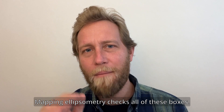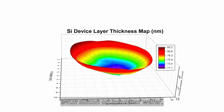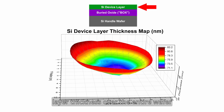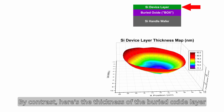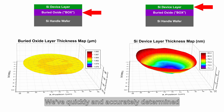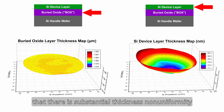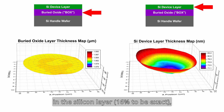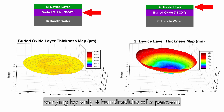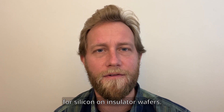Enter ellipsometry. Mapping ellipsometry checks all these boxes. Here's an example where we've mapped a full silicon on insulator wafer. This is the variation of the topmost silicon device layer thickness over the entire wafer, and it's easy to see that this layer is thicker around the edges than in the center. By contrast, here's the thickness variation of the buried oxide layer graphed with the same vertical range. We've quickly and accurately determined that there is substantial thickness non-uniformity in the silicon layer — 16% to be exact — whereas the buried oxide layer is highly consistent, varying by only four hundredths of a percent over the whole wafer. And there you have it: ellipsometry is an elegant screening tool for silicon on insulator wafers.